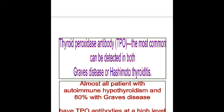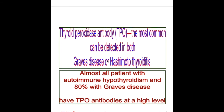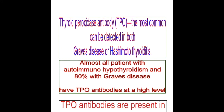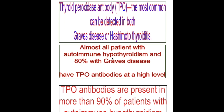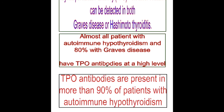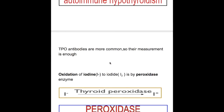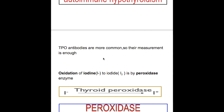TPO antibodies are the most common antibodies, number one. Number two, they can be detected in both hypothyroidism and hyperthyroidism — that is, they can be detected in Graves' disease and also in Hashimoto's thyroiditis. Almost all patients with autoimmune hypothyroidism and 80% with Graves' disease have TPO antibodies at a high level. TPO antibodies are more common than other antibodies, so their measurement is enough.